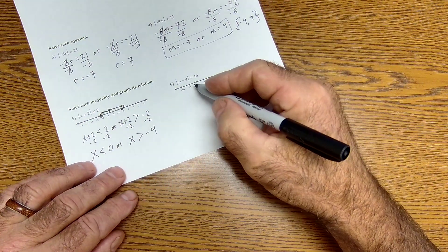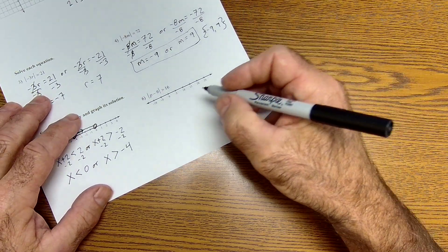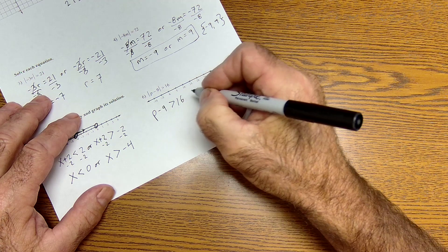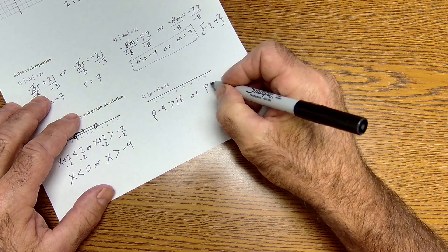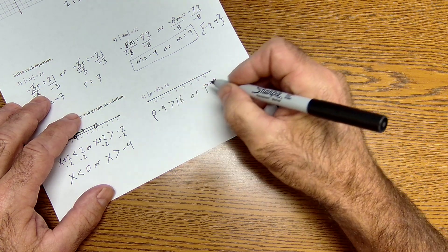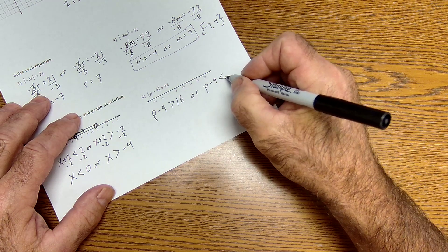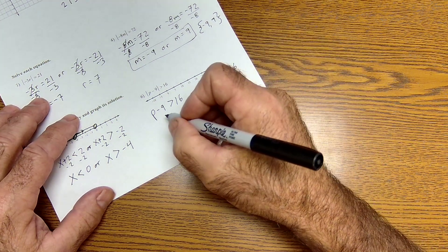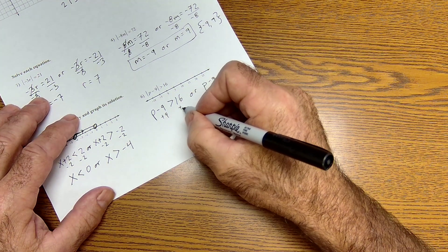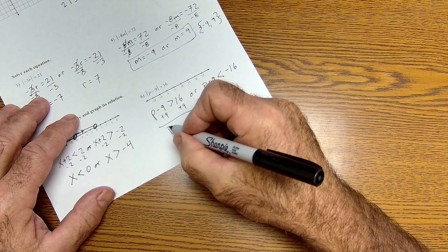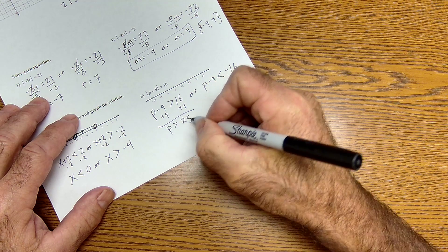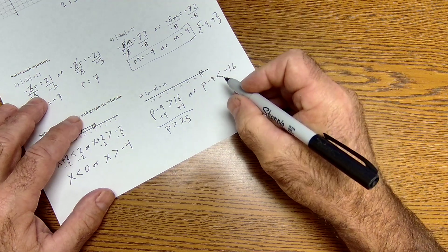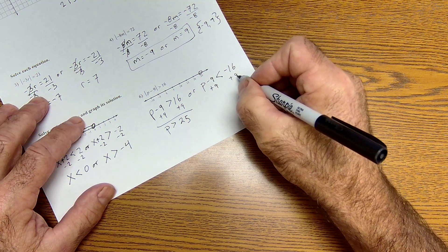Pause the video and try this one. p minus 9 can be greater than 16, one possible solution. Or p minus 9, I'm going to reverse that symbol, can be less than negative 16. Because I'm dividing by a negative to get that negative 16. I'll add 9 to both sides. p by itself, p is greater than 25. There's 25. Again, open circle. It's everything on that side of it. I'll add 9 to both sides here.